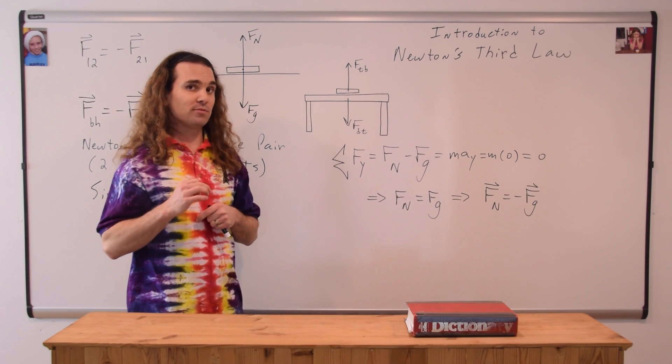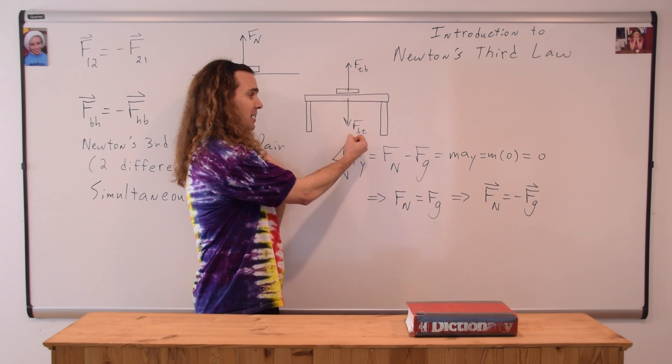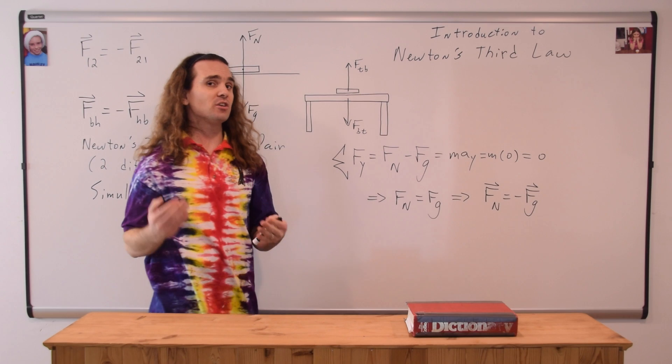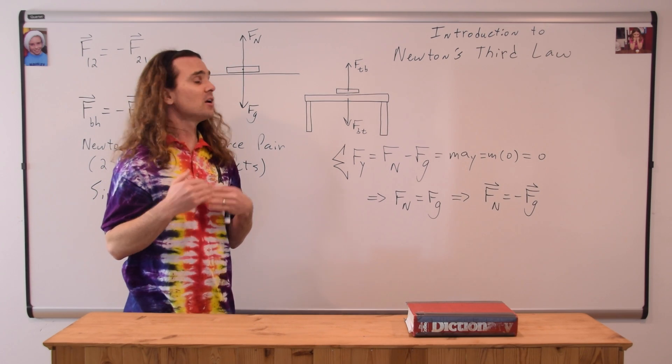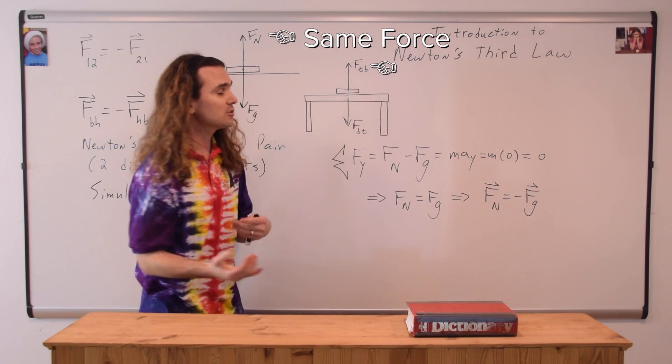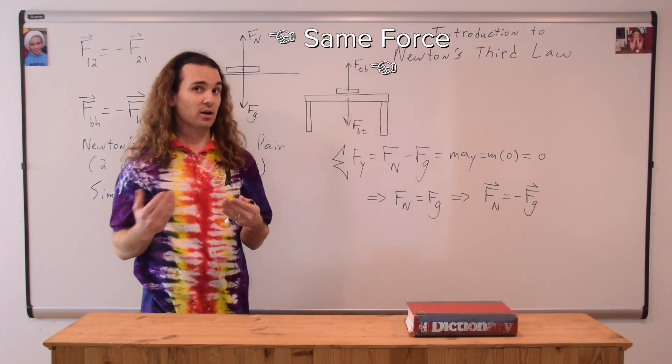There is a downward normal force caused by the book on the table, which is the Newton's third law force pair, to the upward normal force, which is caused by the table on the book.